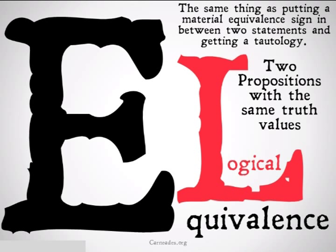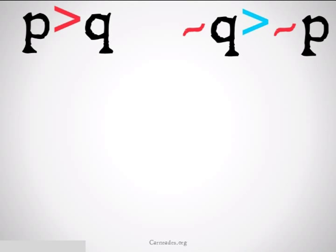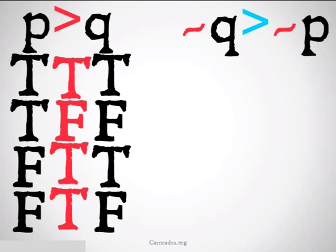Let's take a look at an example. Maybe we want to compare the two propositions P implies Q and not Q implies not P, and see if they're logically equivalent. In order to do this, we need to fill out the truth table. First, for the statement on the left, we fill in the trues and falses for P and Q, and we remember that an implication is only false if the first is true and the second is false. In all of the other cases, it's going to be true.